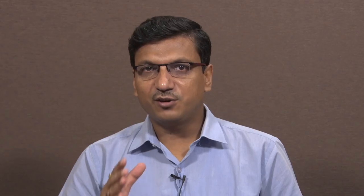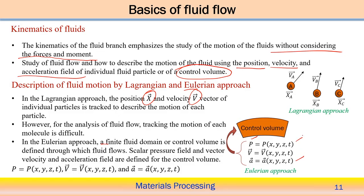In the Eulerian approach, within the control volume, we represent the velocity, displacement, and pressure in terms of x, y, z, and t. The pressure field p is a function of x, y, z; the velocity components are in x, y, z directions varying with time t; and acceleration similarly varies with x, y, z, and t. Here we are not individually tracking the movement of each particle as in the Lagrangian approach — instead we represent the velocity field over a spatial domain at fixed points. This is the basic difference between the Eulerian and Lagrangian approaches.